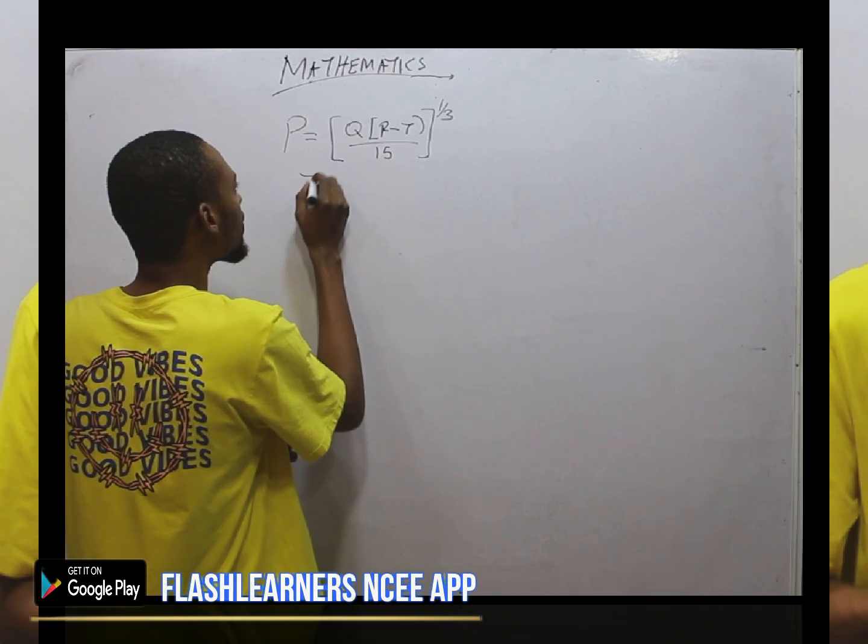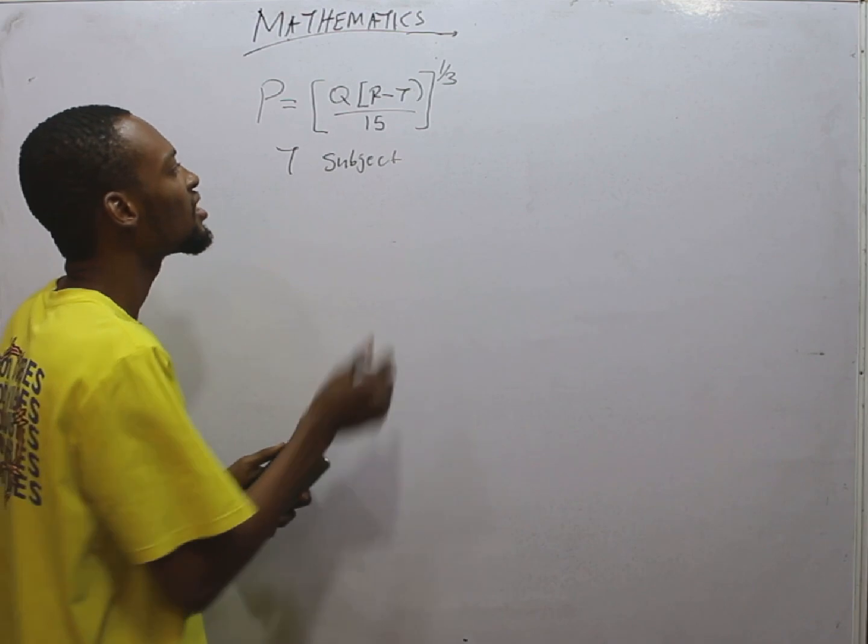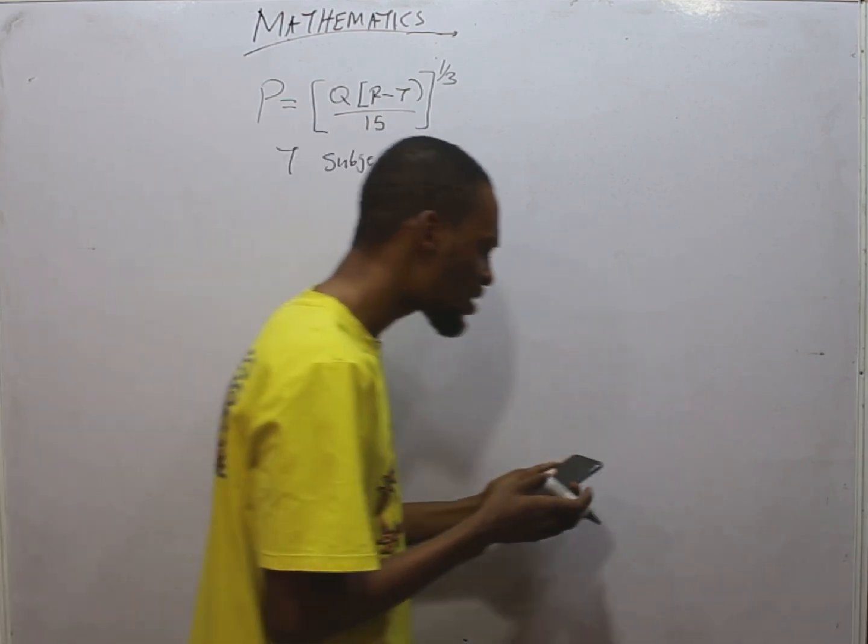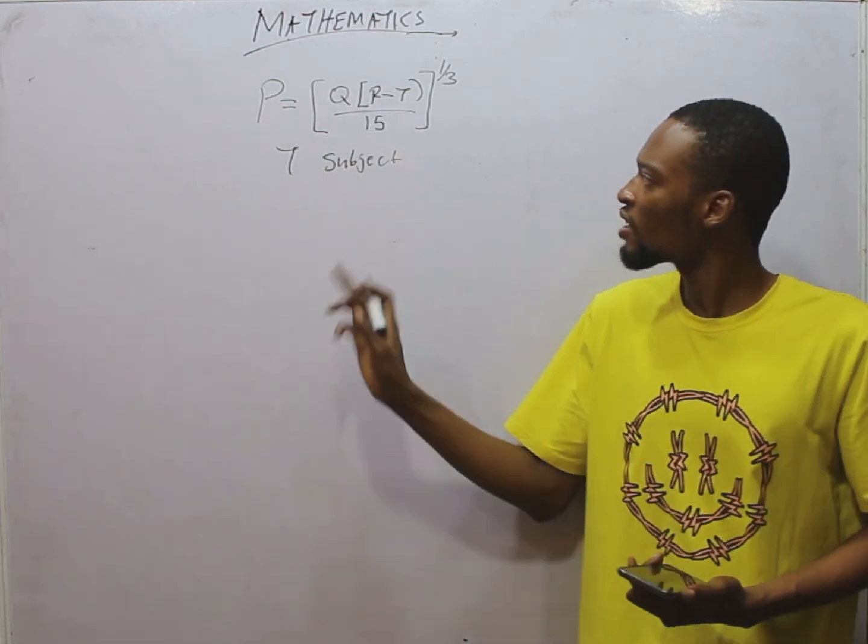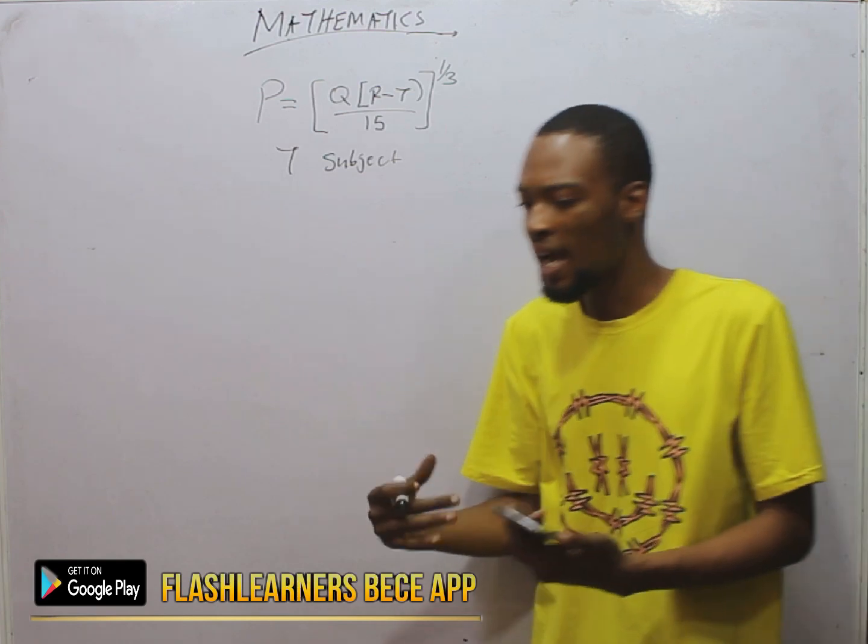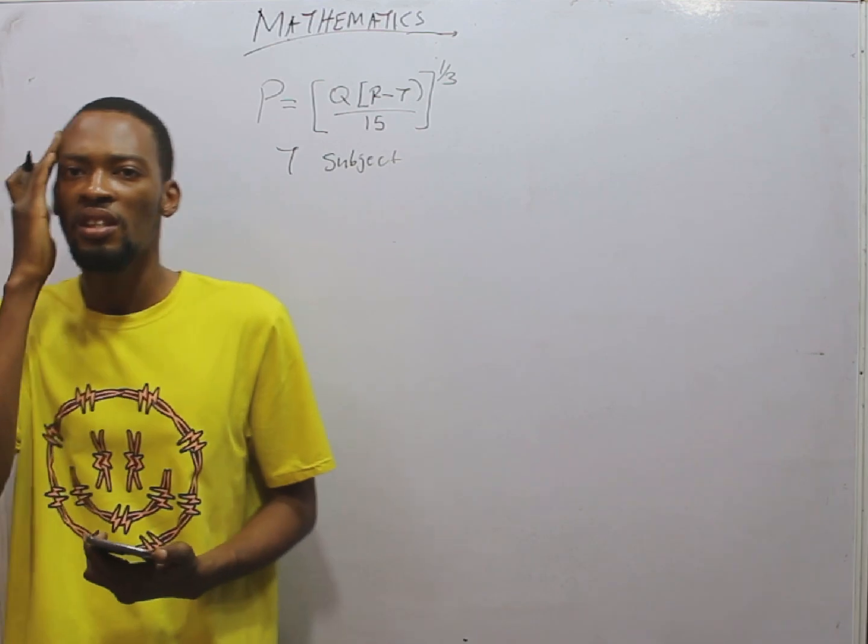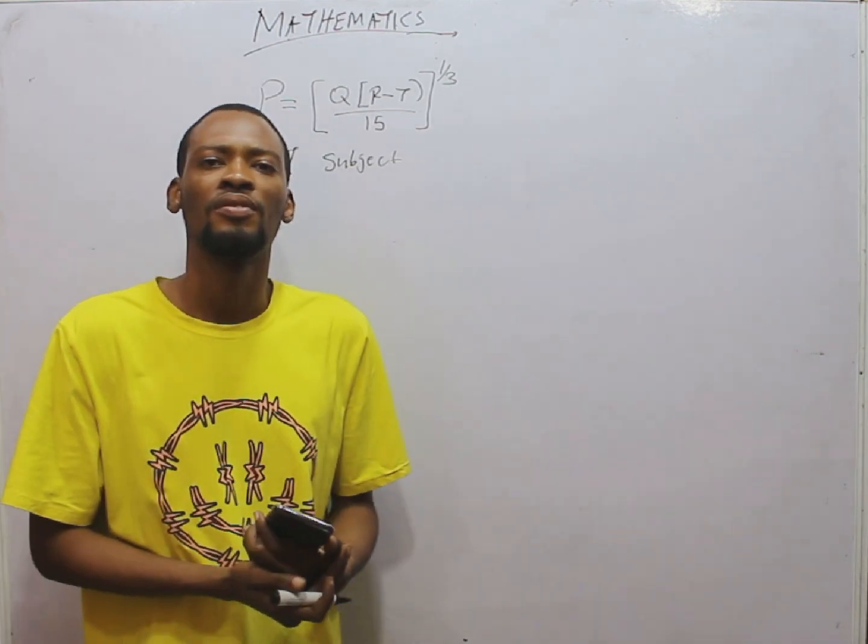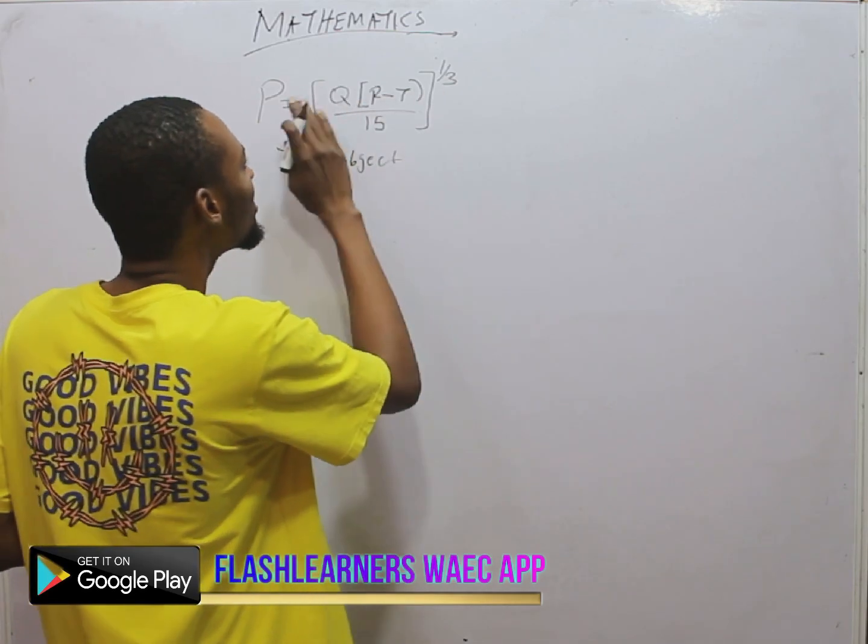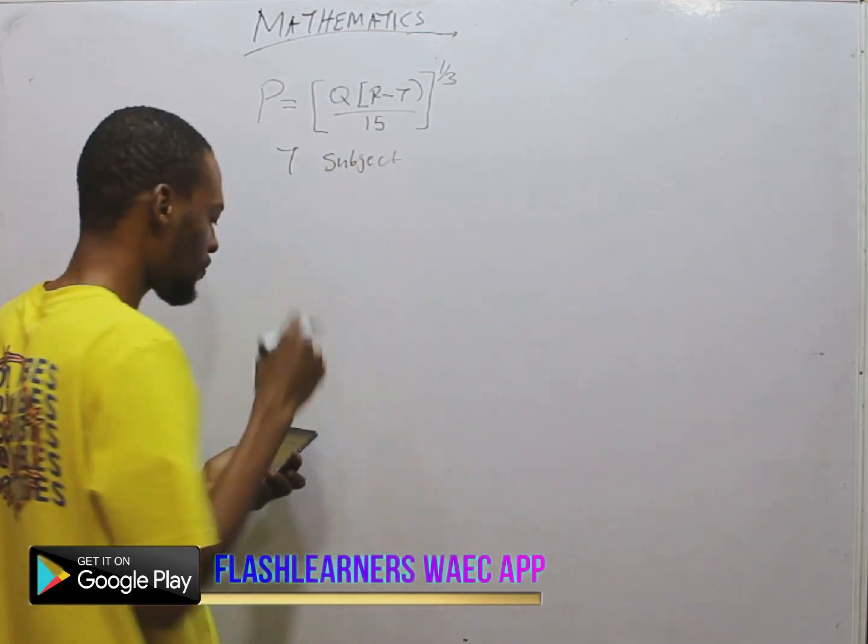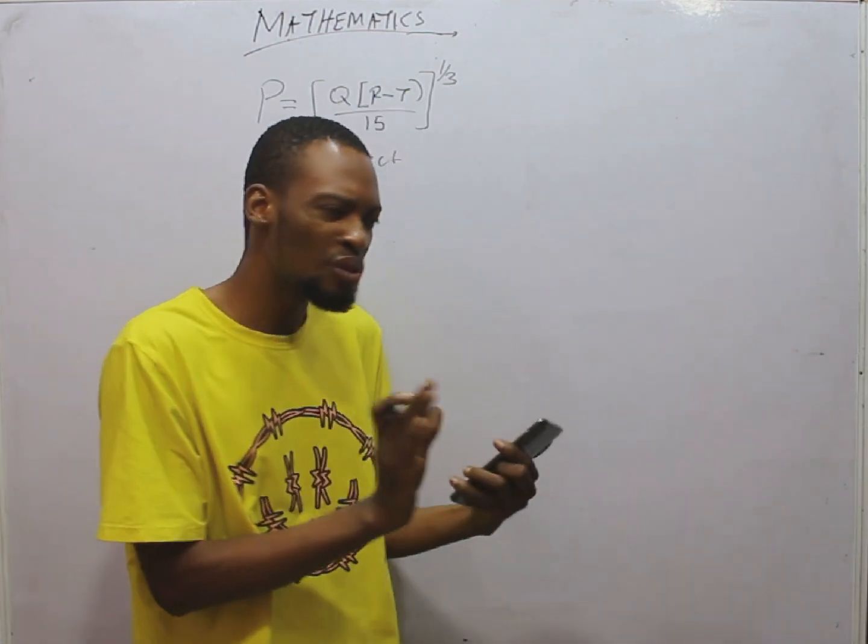T is subject formula. And where is T? This is T hidden inside here. And if I ask you what is already the subject formula, it is simply P is the subject formula. So we are asked to change the subject formula from P to T. How do you do that? This is it. Here is P and everything here is raised to the power of 1 over 3. That is the first thing. We try to remove all the distractions until we get to what you want.